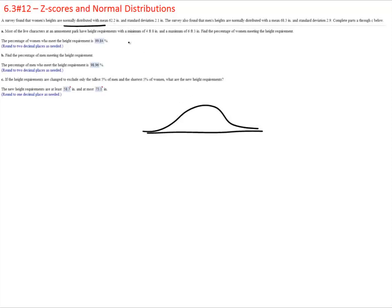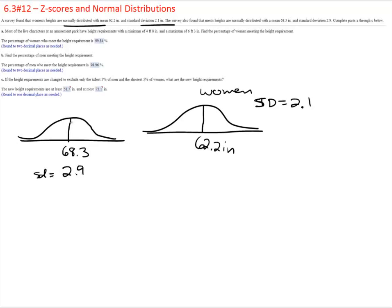So here is my normal distribution with a mean of 62.2 inches and a standard deviation of 2.1. This is for women. Then they also found that men have another similar distribution with a mean of 68.3 and a standard deviation of 2.9.